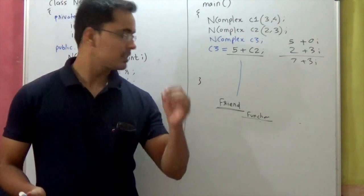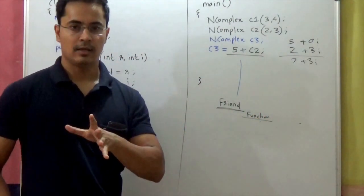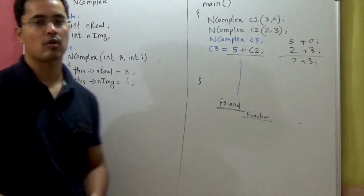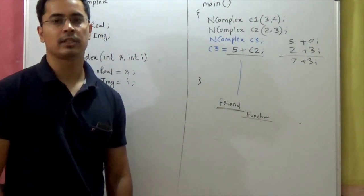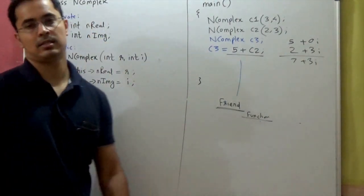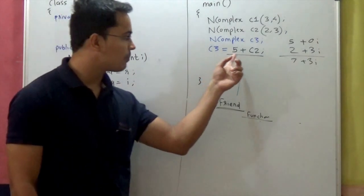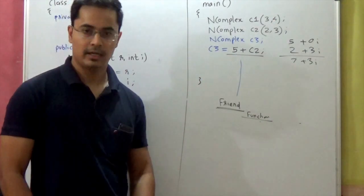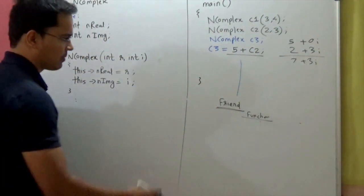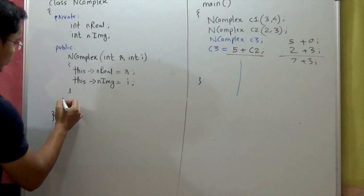So a friend function is a function that is a friend of class n complex. This friend function is allowed to access the private data members of your class, so that we can accomplish this operation. Let's use a friend function to accomplish this in C++.